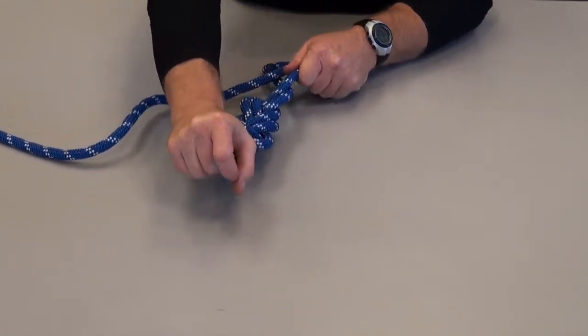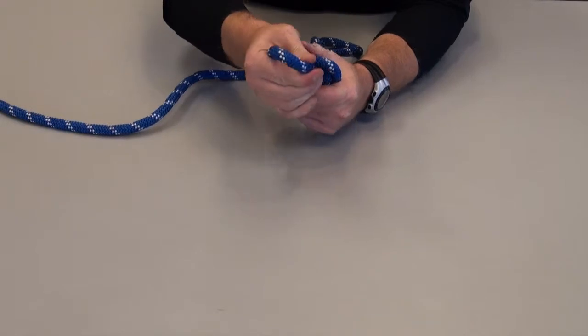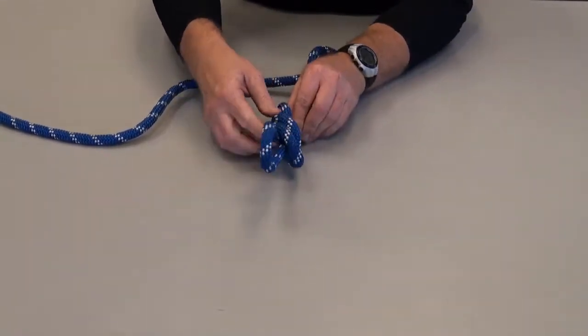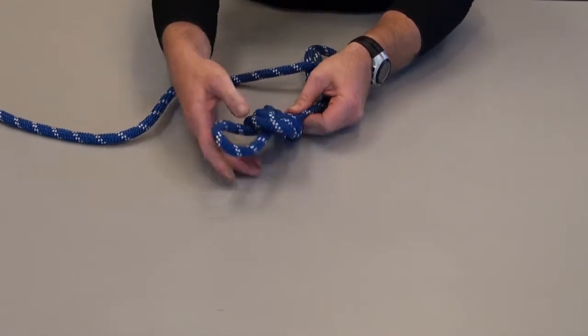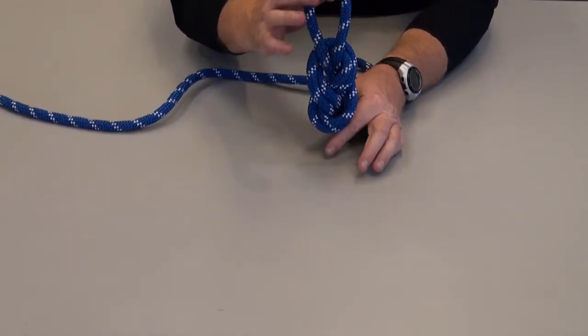Before we set it, ensure that all of our ropes are straight, clean and neat. Pull each independent segment. Figure eight on a bight.